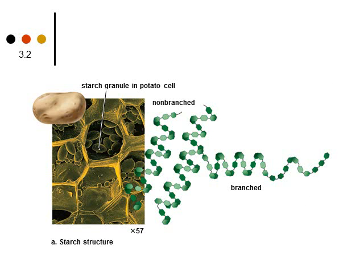This is what starch looks like. Starch is found in potatoes and other plants — it's for short-term energy storage. If you look at the molecule, you see these little green monomers all hooked together, showing that there are many, many saccharides linked together to make up the starch molecule.